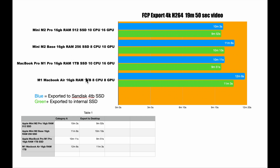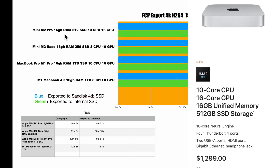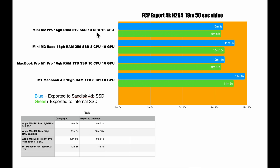Alright, from the top — we have the Mac Mini M2 Pro. I just got it in; it's the base M2 Pro with 16GB of RAM, 512GB SSD, and the 10-core CPU / 16-core GPU. That should be the best device of all the ones I have right now, and those are the export times right there.